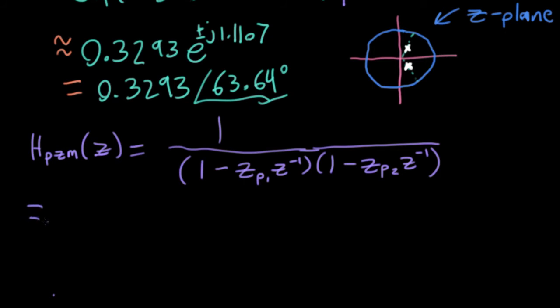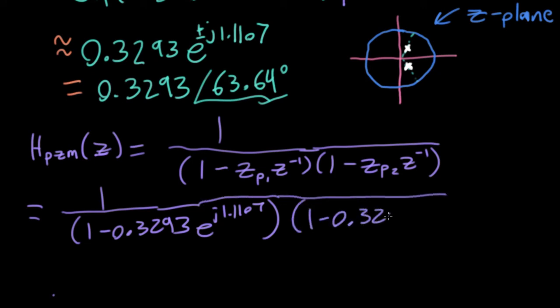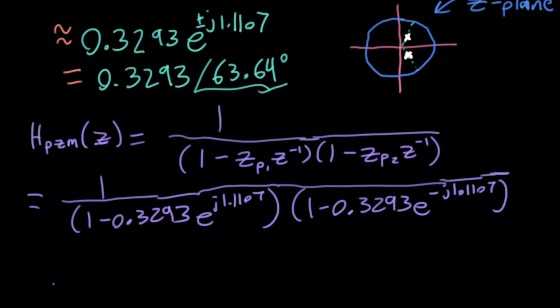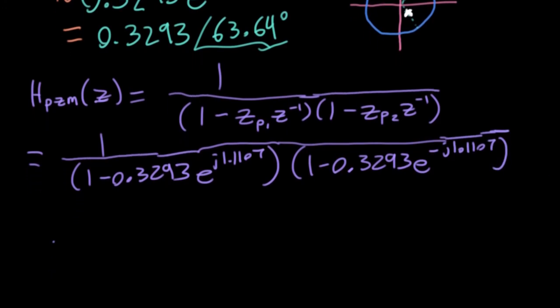So what I'm going to do on the next line is just substitute in the values we found. So we had one minus 0.3293 e to the j 1.1107, and then we have one minus the same thing, except it's complex conjugate. So this factored form is the way that it's most convenient to think about in terms of thinking about the frequency response.